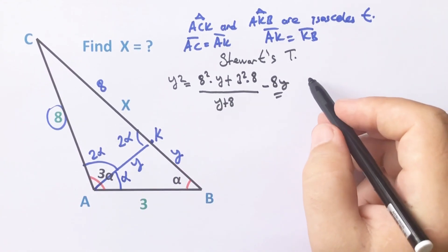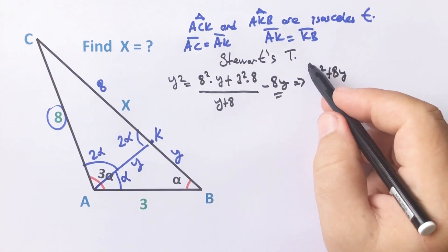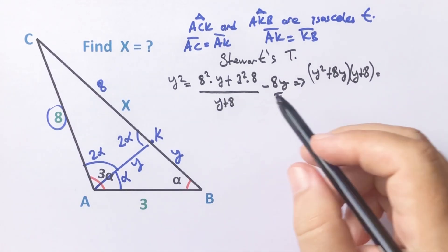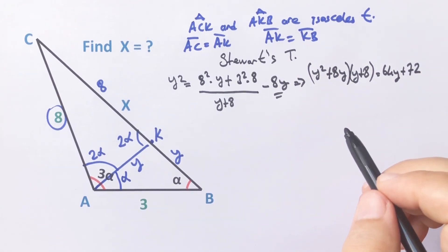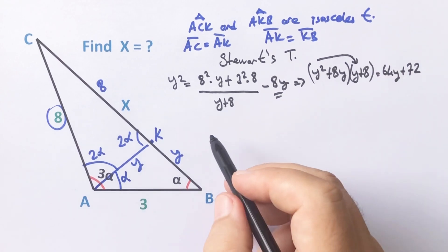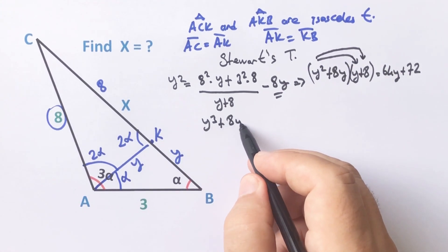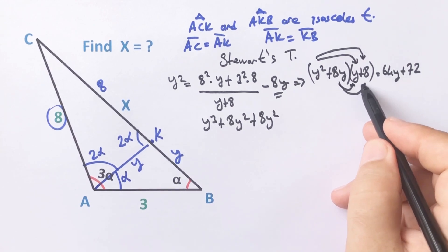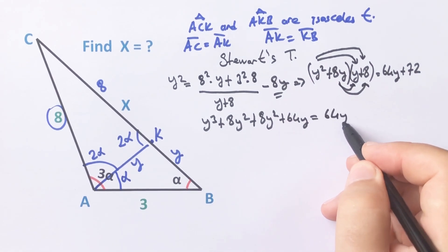Let's move this expression to the left side of the equation. We get y squared plus 8y times (y plus 8) equals 64y plus 72. Expanding: y cubed plus 8y squared plus 8y squared plus 64y equals 64y plus 72.